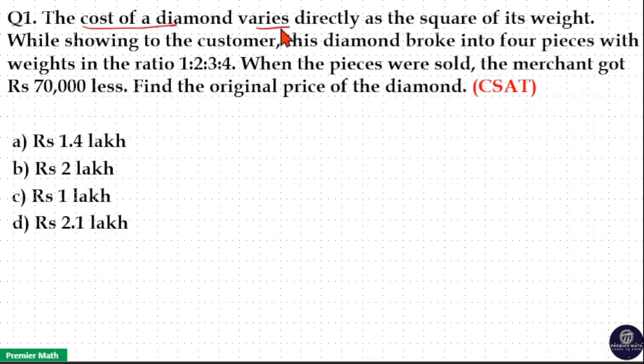The cost of a diamond varies directly as the square of its weight. While showing to the customer, this diamond broke into 4 pieces with weights in the ratio 1:2:3:4. When the pieces were sold, the merchant got Rs. 70,000 less. Find the original price of the diamond.